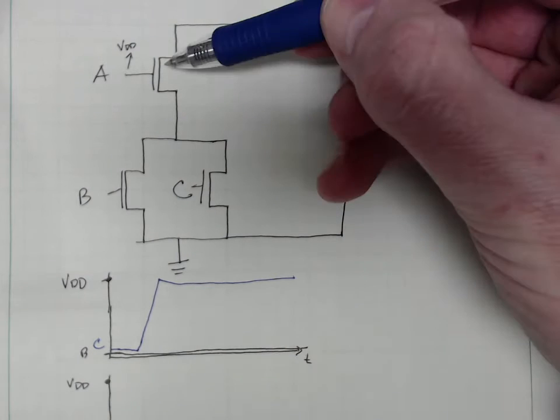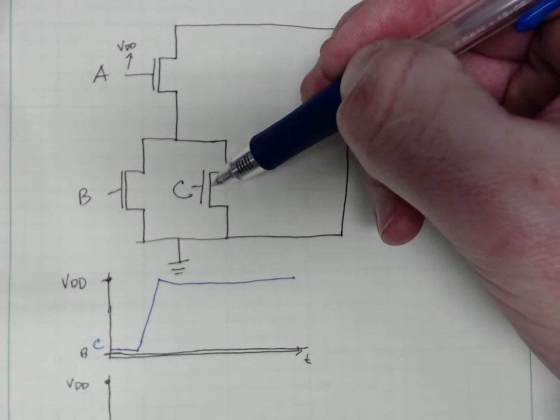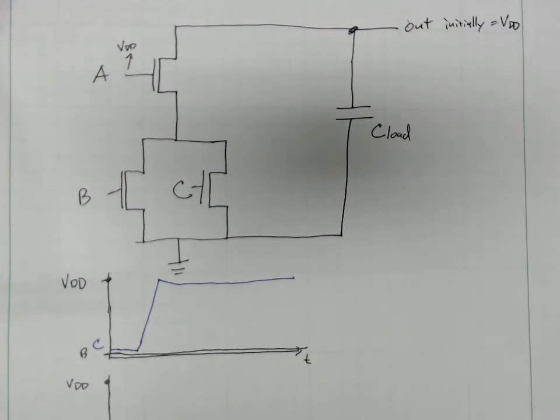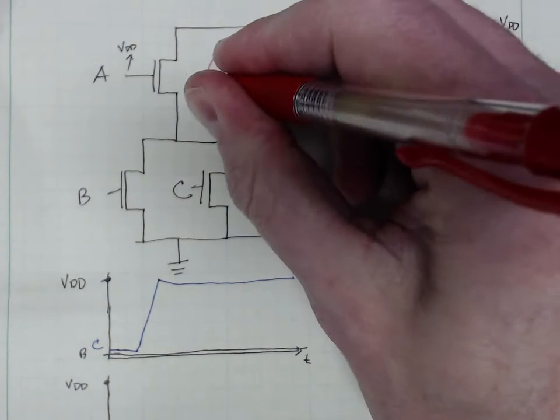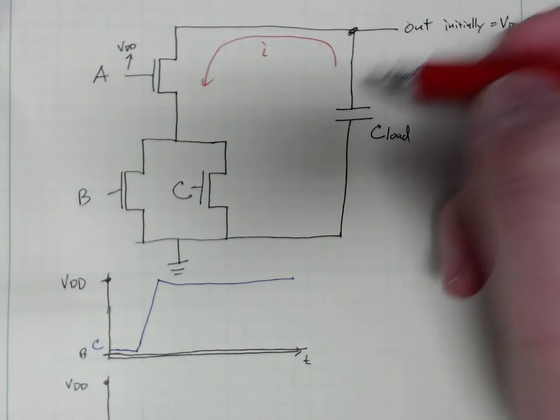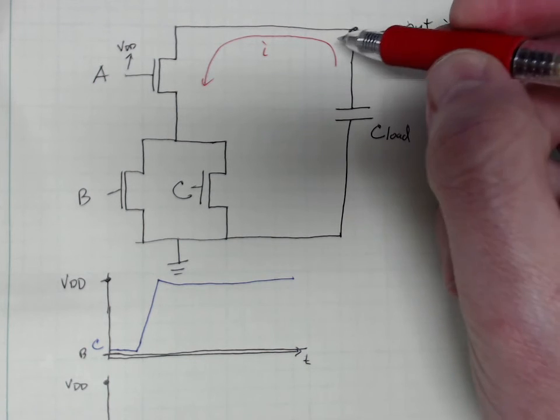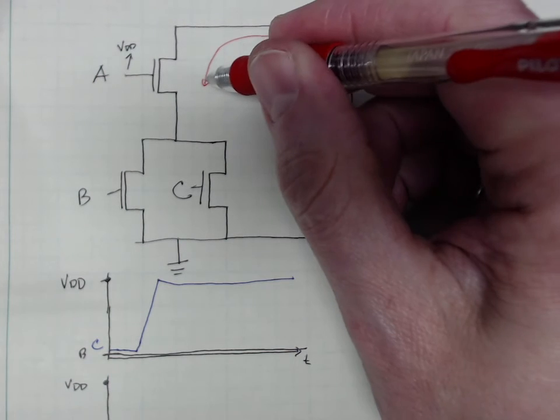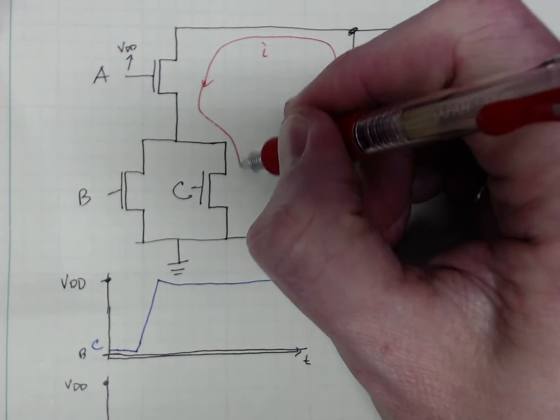At this moment we now have A is on, C just turned on, there's gonna be current flowing this direction discharging C load. The output is gonna go down and that path is gonna be through just this transistor.